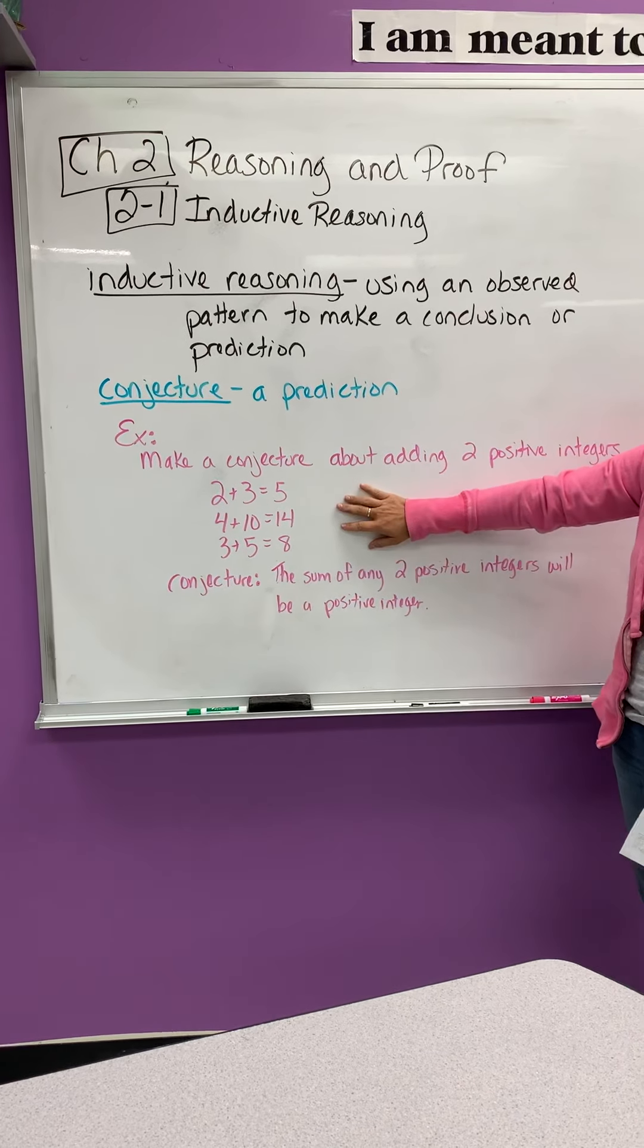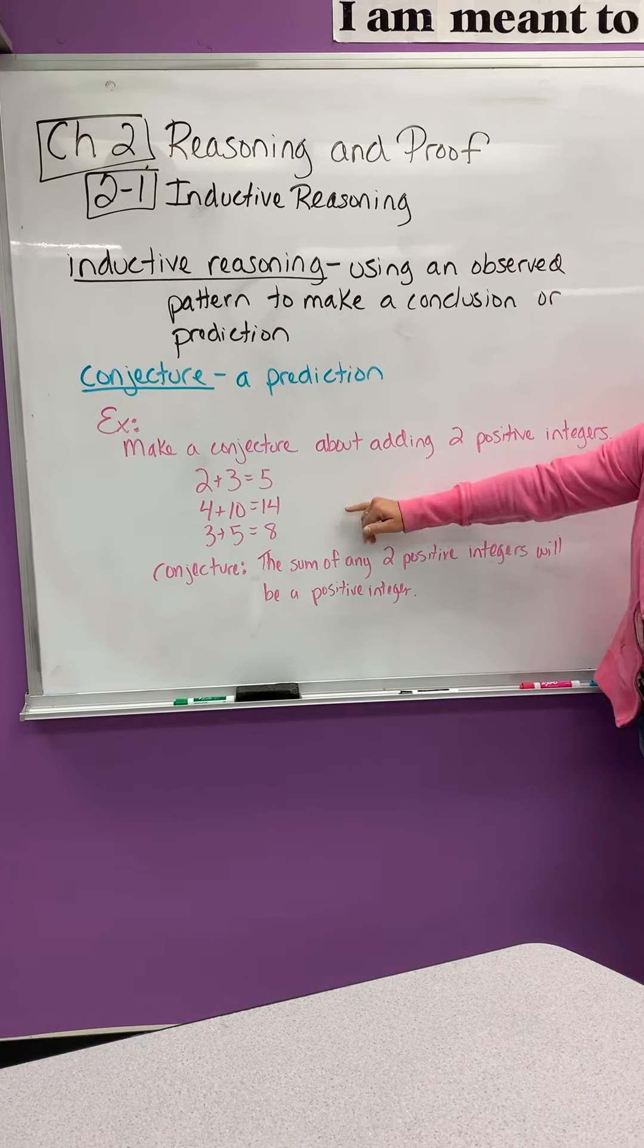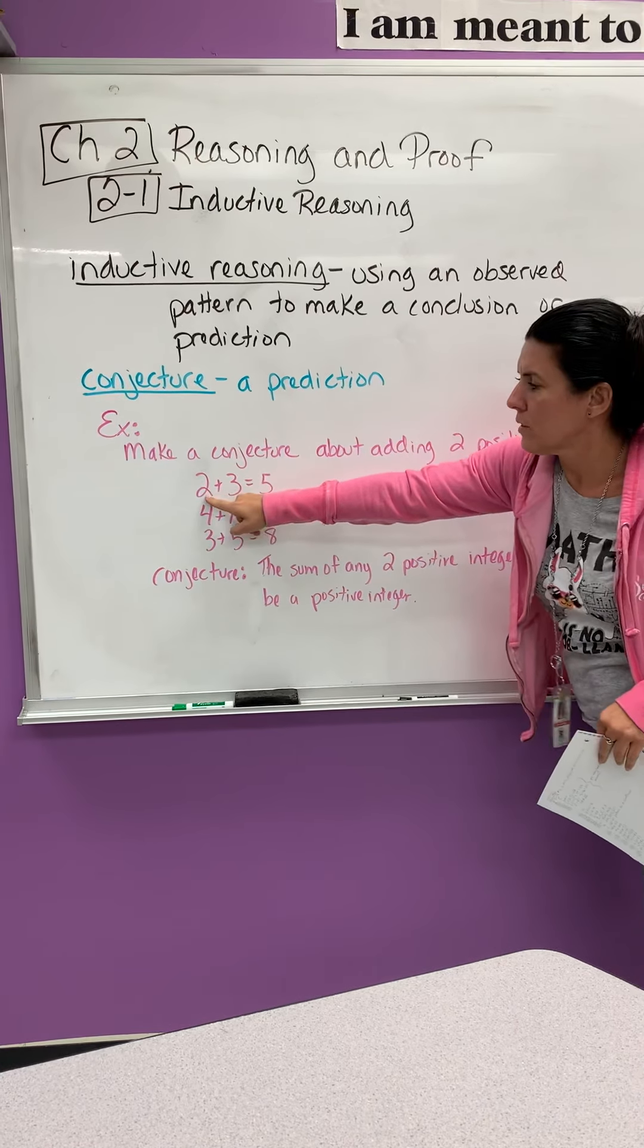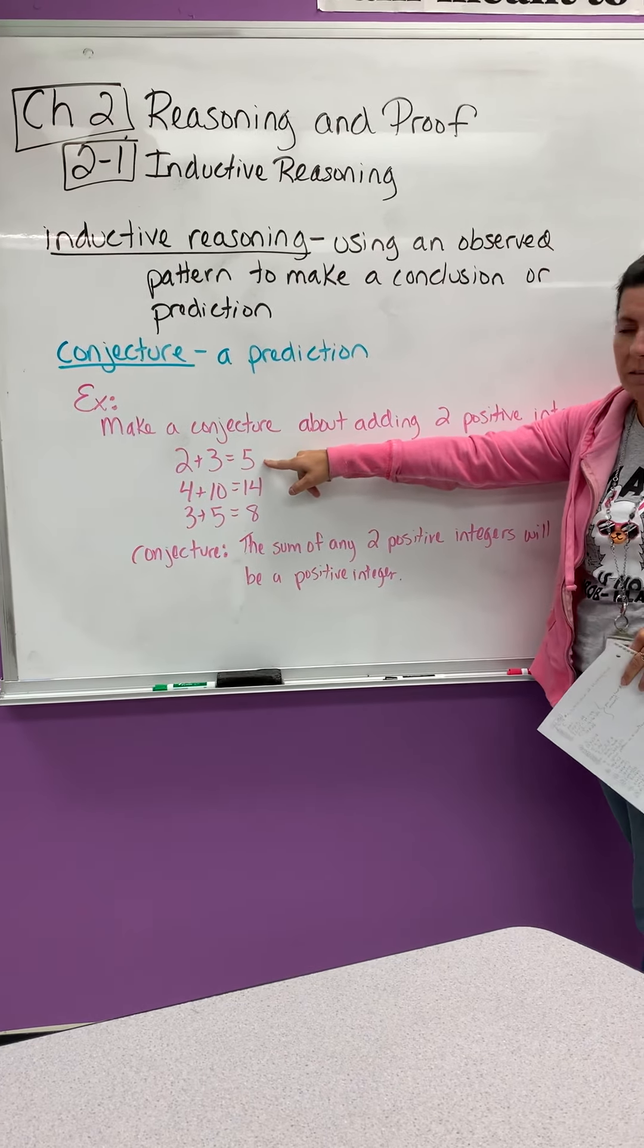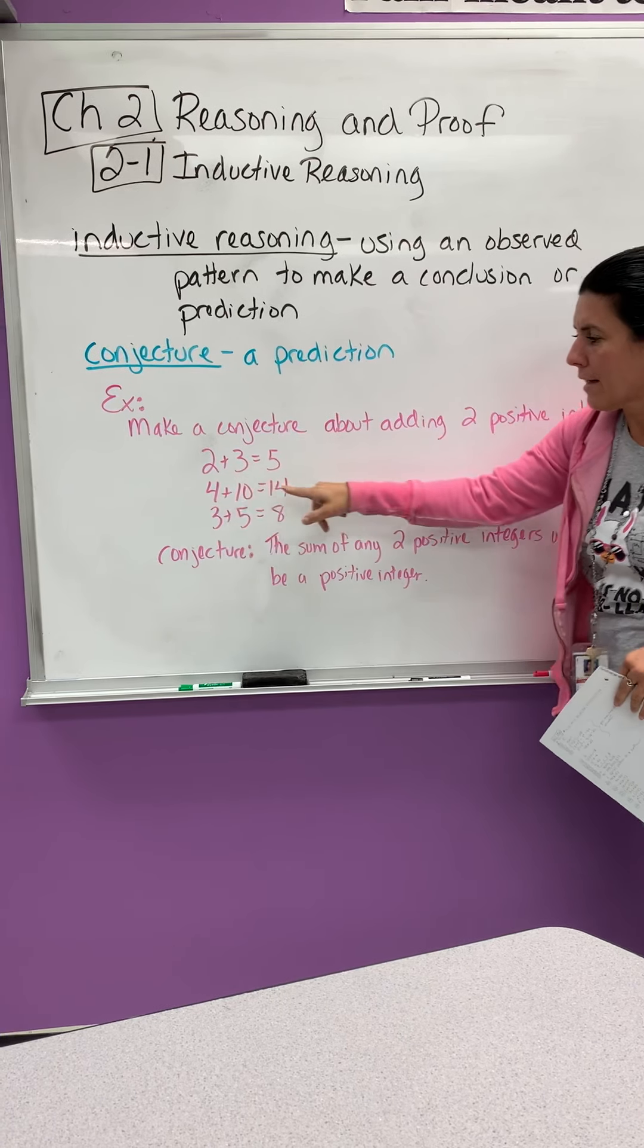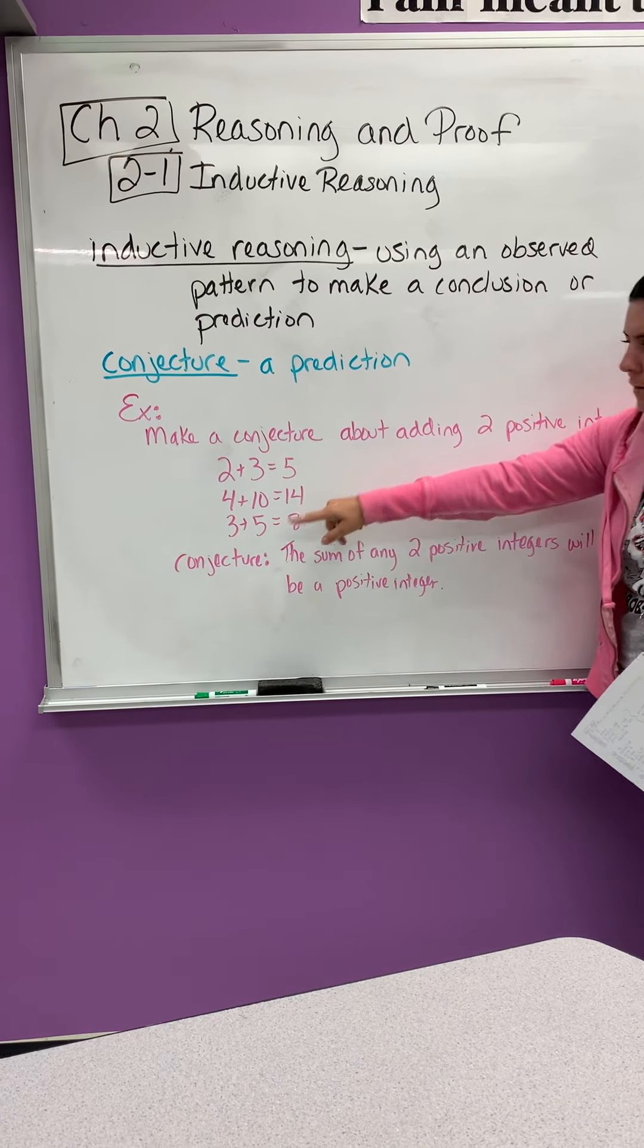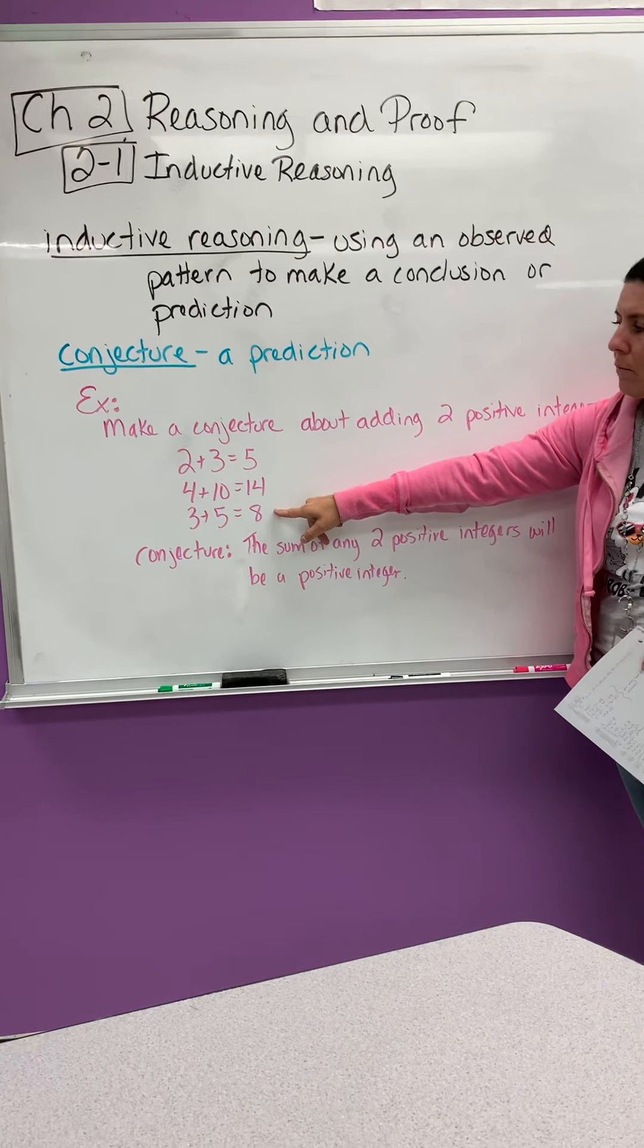So here's an example. It says make a conjecture about adding two positive integers. So we are observing this pattern. So 2 is positive, 3 is positive, and when we add it we got another positive number. 4 is positive, 10 is positive, and we add it we get another positive number. 3 is positive, 5 is positive, we add it and we get a positive number.